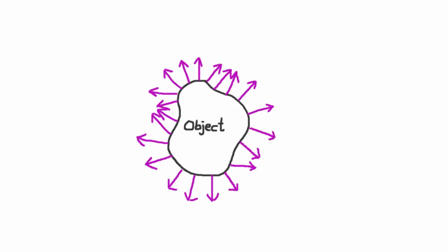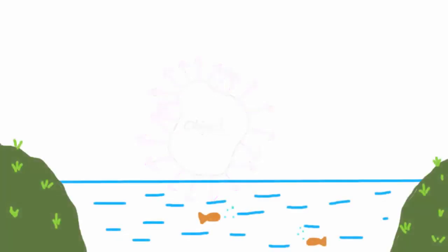As you hopefully remember from the lighting tutorials, the lighting on an object is based on its surface normals. Unfortunately our water is a completely flat quad, so the normals would all be pointing straight upwards, and the lighting would be very boring indeed.